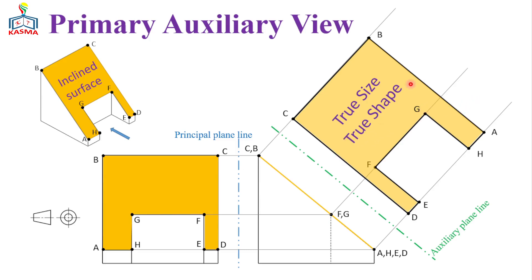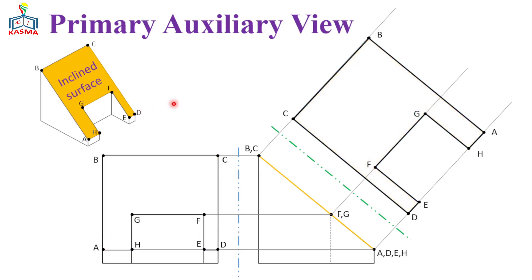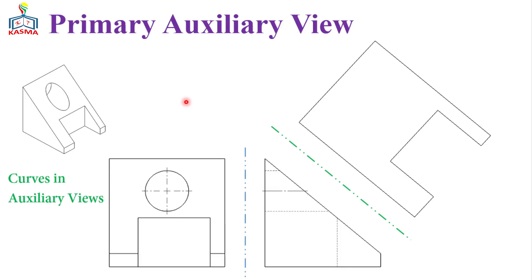Now let's add one feature here. The feature is just a bore on this surface, so if we bore this one with a circular feature, we'll have this object. This object will have a curve in the auxiliary view. To construct such curves on the auxiliary view, we can use the division method.